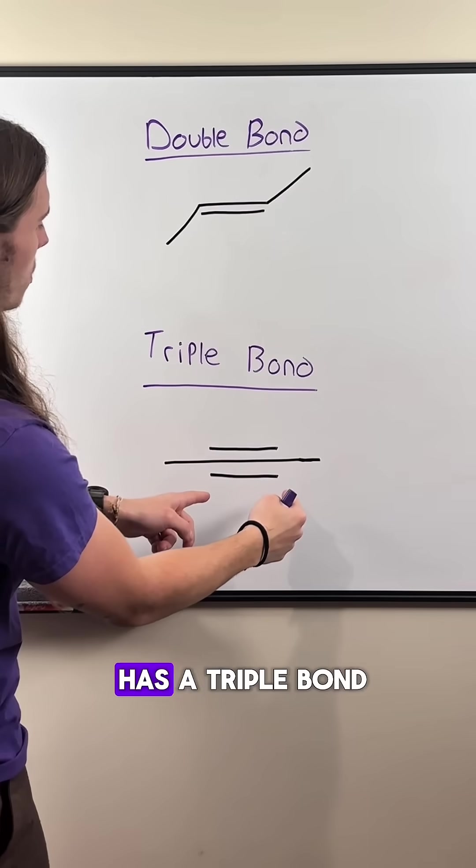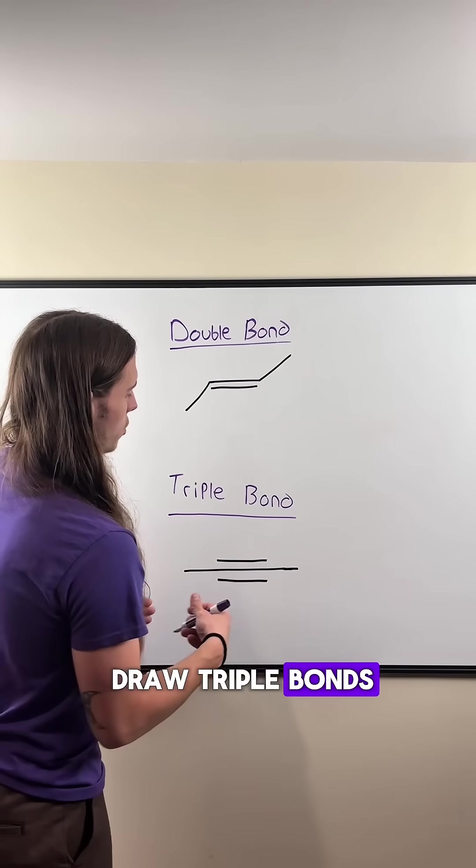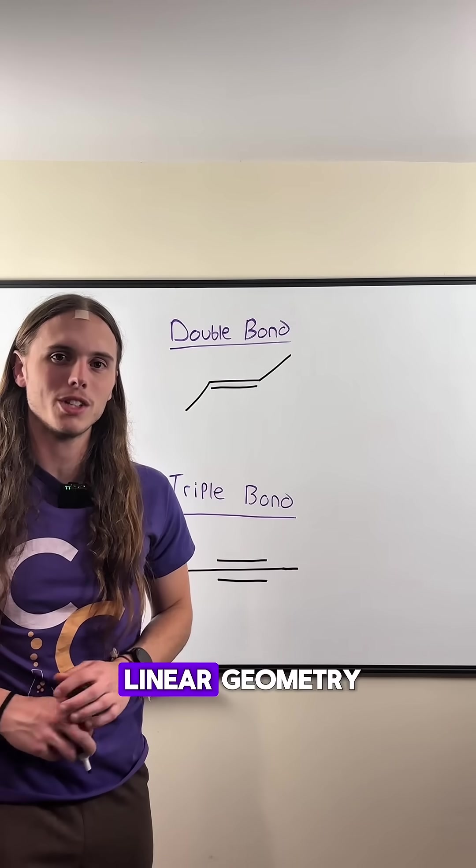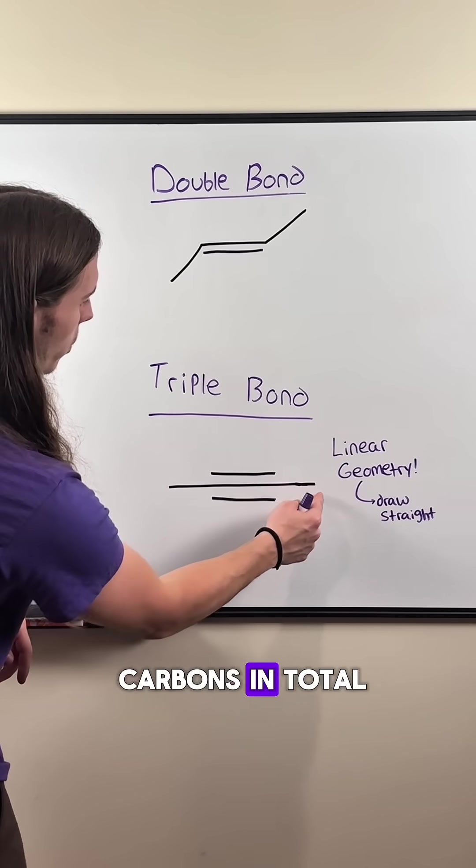But if your molecule has a triple bond, there will be three lines in between them. Make sure whenever you draw triple bonds, you draw them straight since they have a linear geometry. And don't forget that these ends count as carbons, so we have four carbons in total.